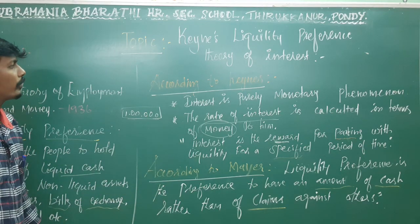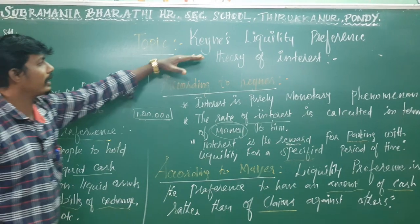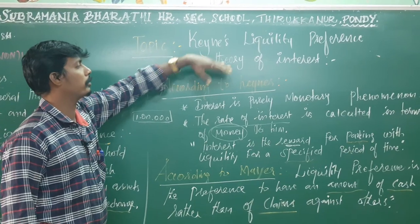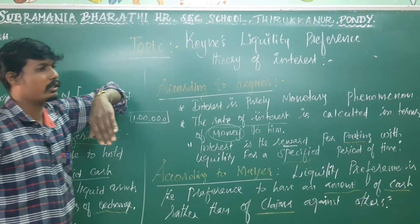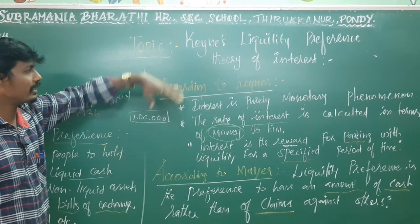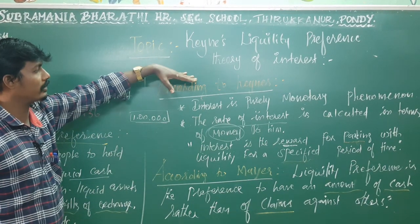Keynes named this concept the Liquidity Preference Theory of Interest. This is Keynes' Liquidity Preference framework for understanding the rate of interest.